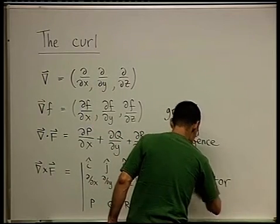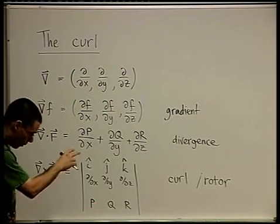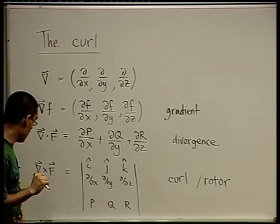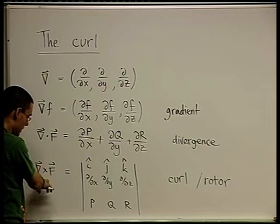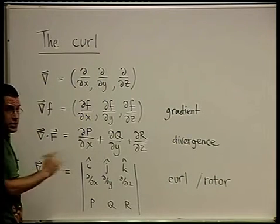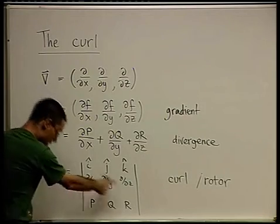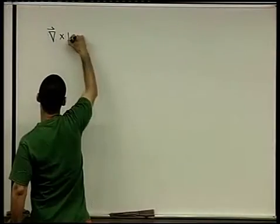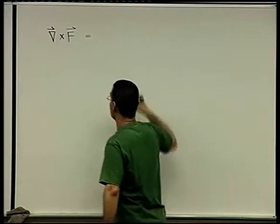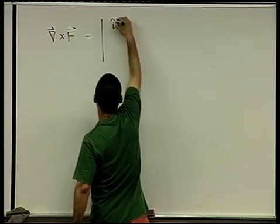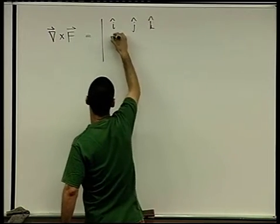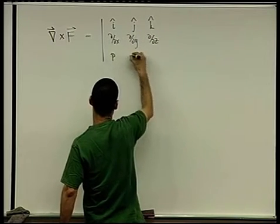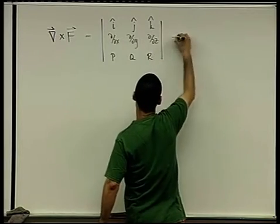We'll see why these names make sense only after we discuss Stokes' theorem. So this is the next appearance — the curl. Let's rewrite it by opening up the determinant. The curl of f is the determinant with rows i, j, k; then d/dx, d/dy, d/dz; and the components of f: p, q, and r.